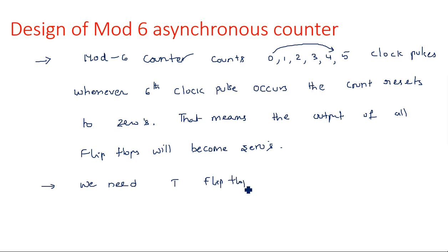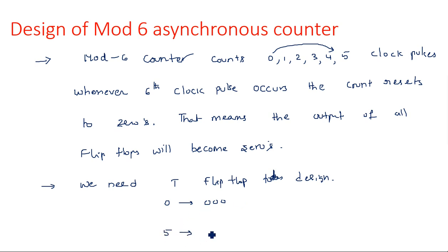How many flip-flops do we need to design this asynchronous counter? From 0 to 5, we need to find the minimum number of bits to represent these values. The value 5 can be represented with a minimum of 3 bits — 1, 0, 1 — so we need 3 bits total. Therefore, we should have 3 T flip-flops to design this asynchronous mod 6 counter.